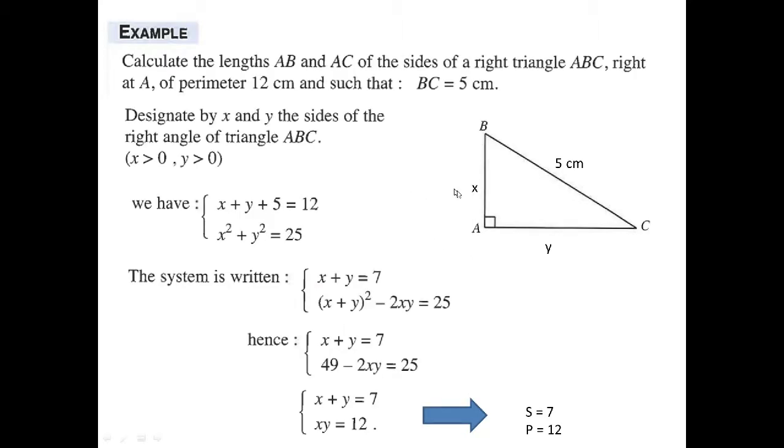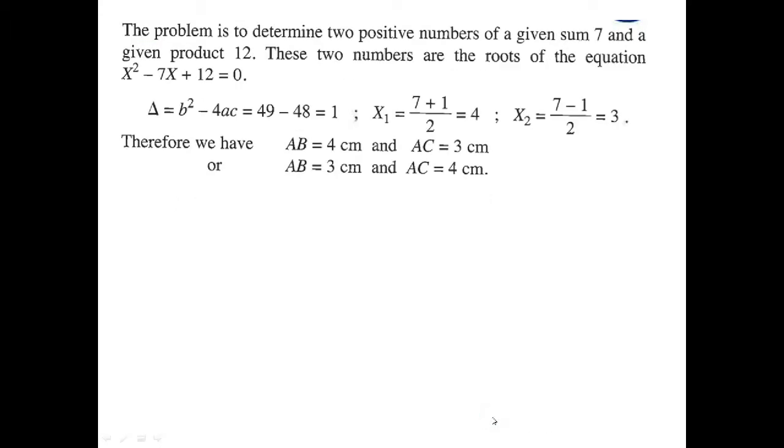If he asked you here in this example to find X and Y, you need to create two equations. One came from perimeter and the second from Pythagoras theorem. Easily we can get two equations: X plus Y equals 7, XY equals 12.